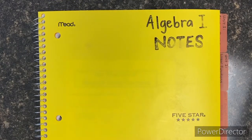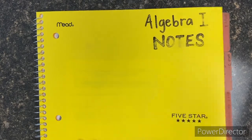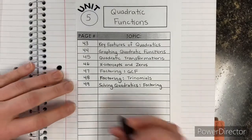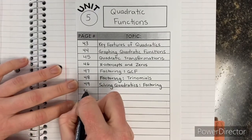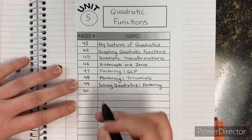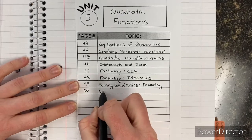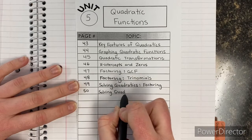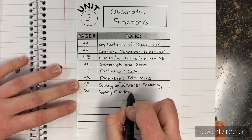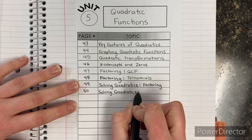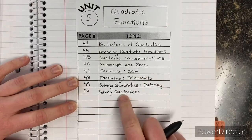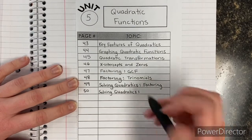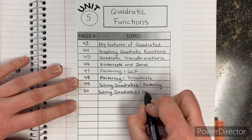Welcome back, everybody. We are ready for another set of notes, so flip to unit five. Here's our table of contents — we are on page 50, and we're still solving quadratics. I'm going to show you a different way that you can solve them, and it's by taking square roots.